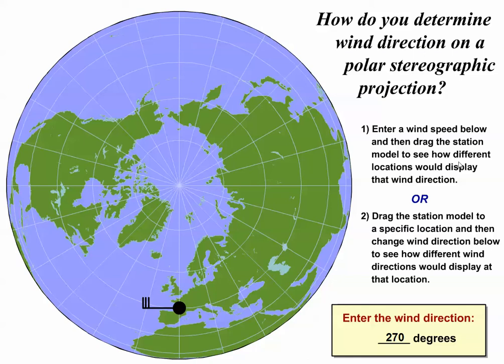This is a polar stereographic projection focused on the North Pole. Here's North America, over here is Asia, here's Europe, and Africa is toward the bottom.